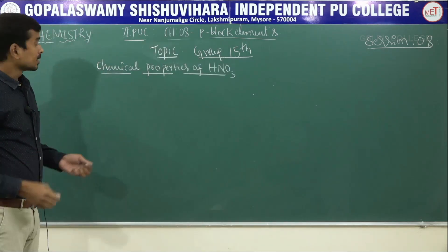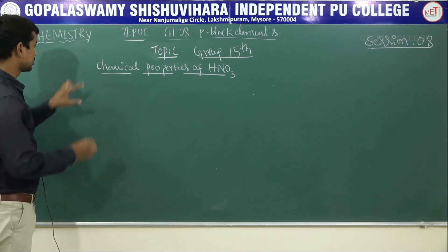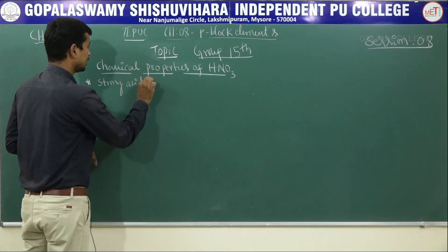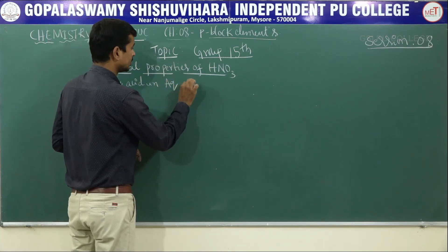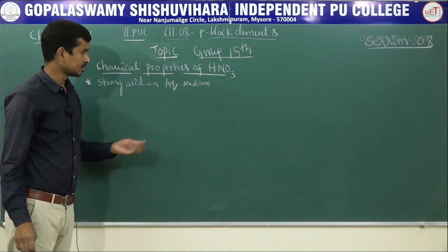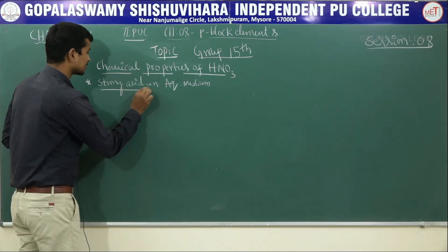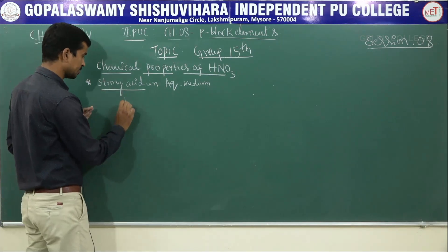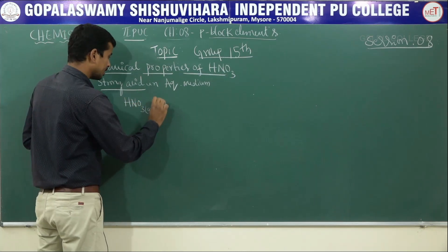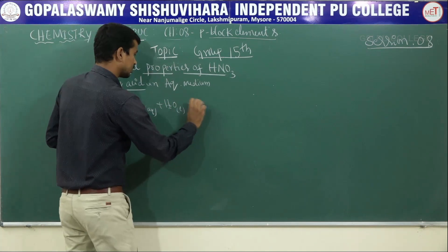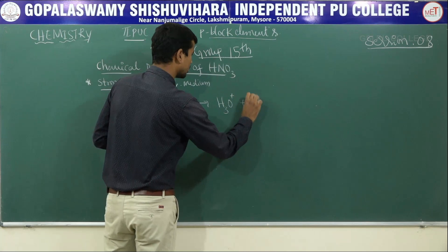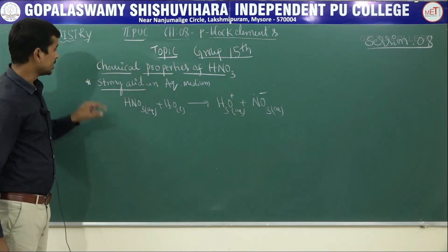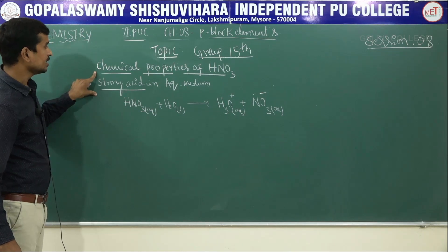The first important chemical property of nitric acid is that it acts as a strong acid in aqueous medium. Aqueous medium means water as solvent. HNO3 undergoes complete ionization, giving H+ ions very fast. HNO3 in water gives hydronium ion H3O+ and nitrate ion NO3−. Hence, HNO3 is strongly acidic in nature.